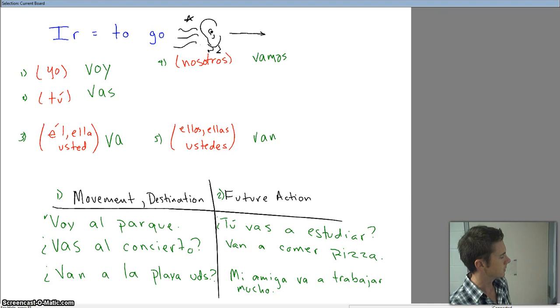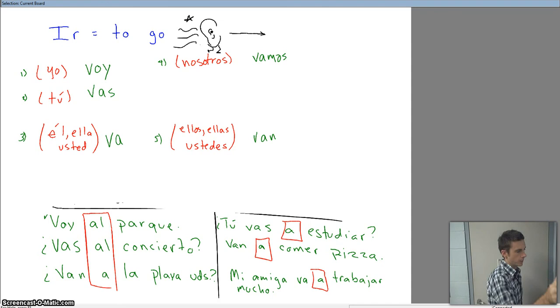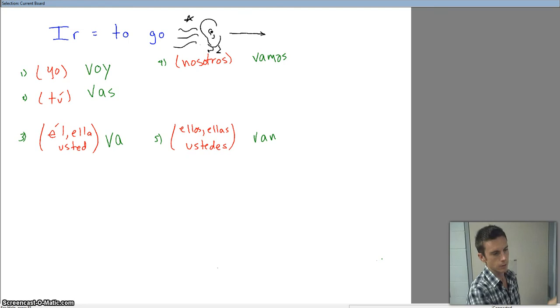Alright. So over here on slide one, you have three examples of movement or destination. On the other side you have two or three examples of future action. One key piece, and I'm going to delete these in a moment, so I need you to write them down. One key piece that is absolutely necessary, and I'm going to circle it here, is that right there. And this right here. When you're going to tell where you are going, or you're going to add on a verb to say what you are going to do in the future, you have to have that preposition a there. So I'm going to erase this, and I'm going to show you what happened in a couple of our examples.